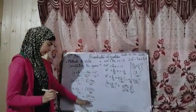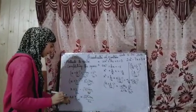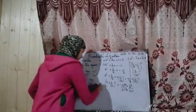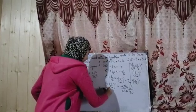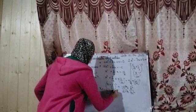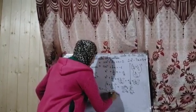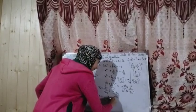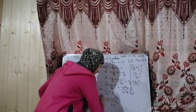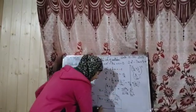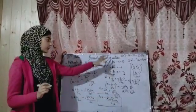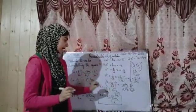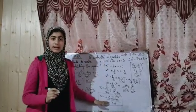Now transposing b/2a to the right side, it becomes minus b/2a. So x = -b/2a ± √(b² - 4ac) / 2a, which gives x = [-b ± √(b² - 4ac)] / 2a. This is our quadratic formula, obtained by the completing the square method.